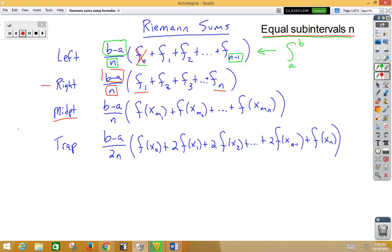Again, let's remember we need to know that we have equal subintervals for n. The b minus a are the bounds of integration. n is the number of subintervals. And remember, with a midpoint, we need to be doing the midpoints of each of the values.